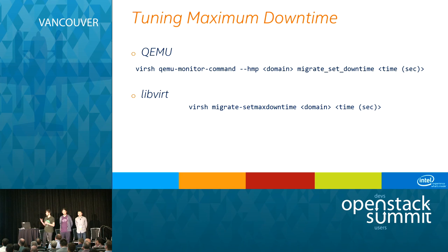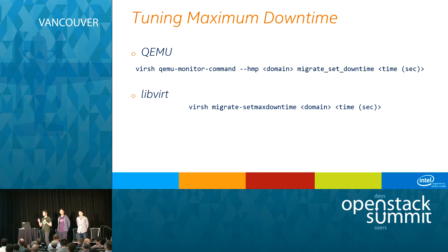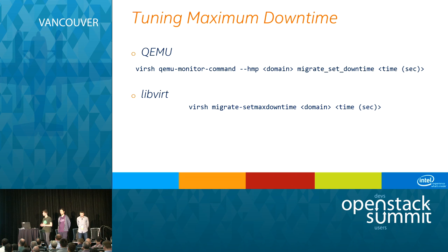As mitigation options, you can tune the maximum tolerable downtime that the VM can suffer. The higher the value, the earlier QEMU can decide to stop the VM on the source host and transfer the remaining state. There are two commands for this: the QEMU command, which can only be used before live migration is in progress, and the virsh command, which can only be used while live migration is in progress. The QEMU command accepts values lower than one, while the virsh command accepts only values greater than or equal to one.